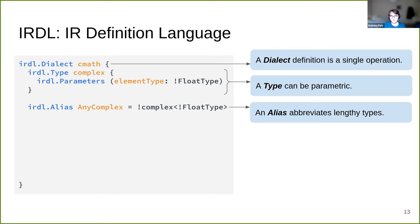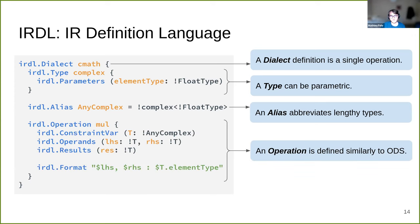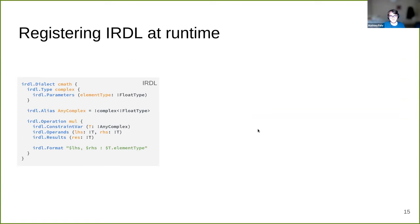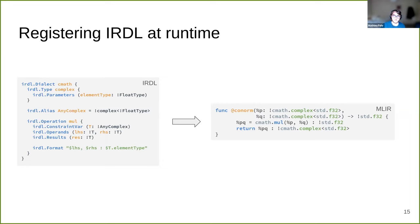We may define aliases, which are easy abbreviations for long types or attributes. Then we can define operations, similar to ODS. For instance, we define a multiplication operation that is generic over T, has two operands of type T and one result of type T, and has a nice formatting for use in MLIR files. The main benefit of using IRDL here is that you could, at runtime, register the dialect in MLIR, define MLIR programs that use cmath, and then define a simple function taking two complex number parameters and returning their multiplication.